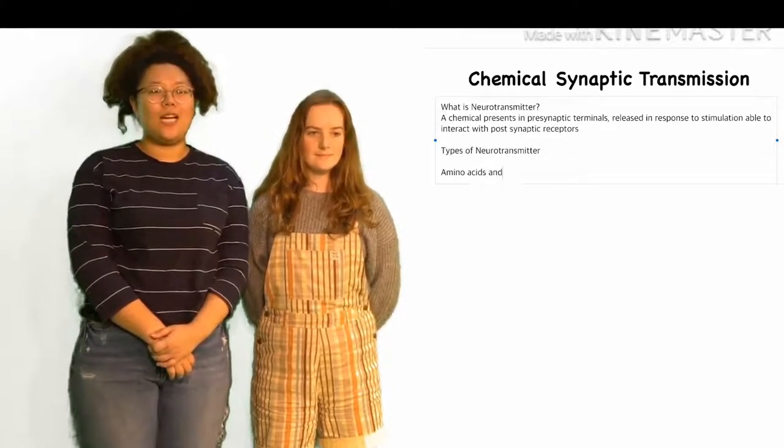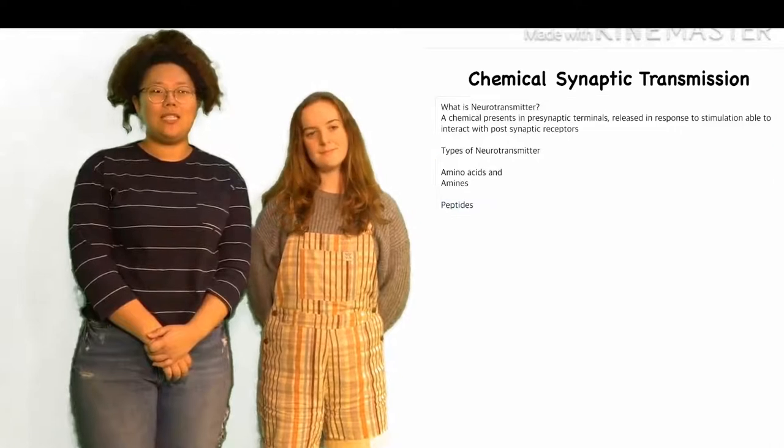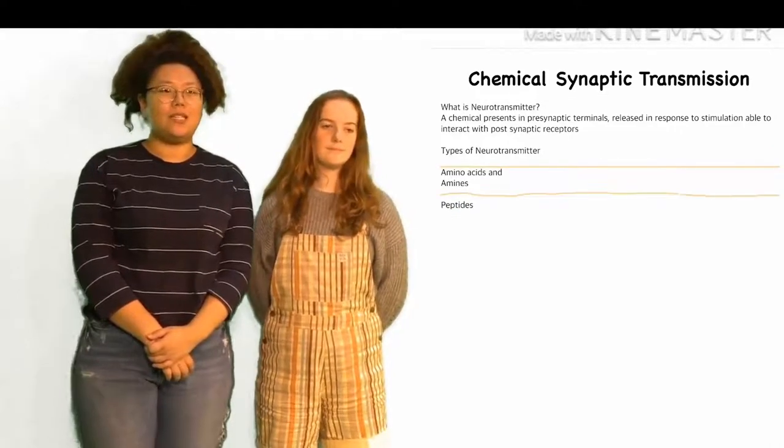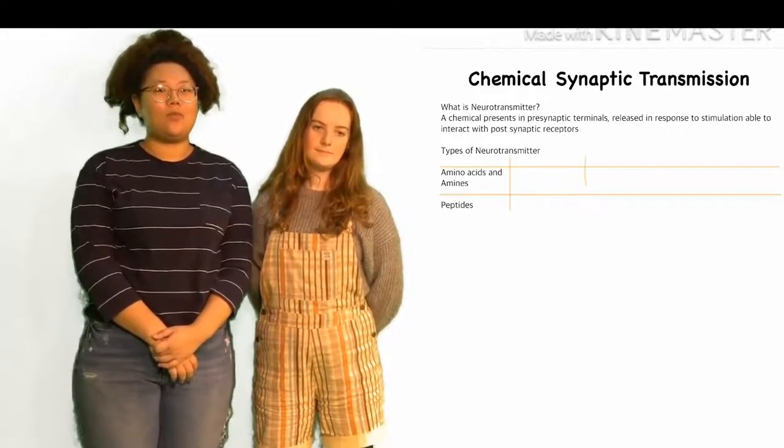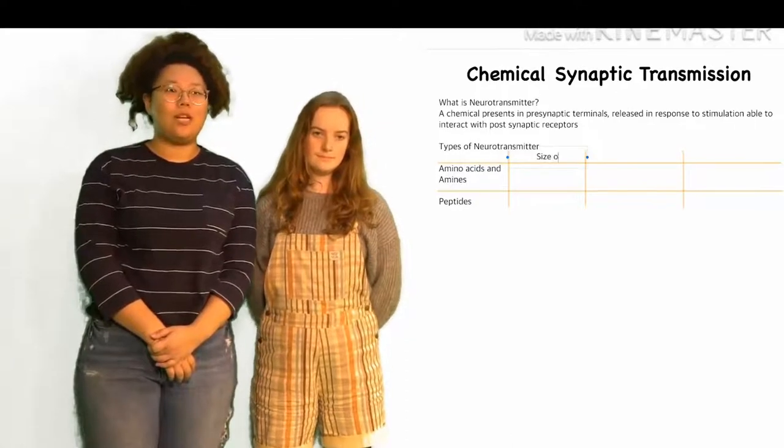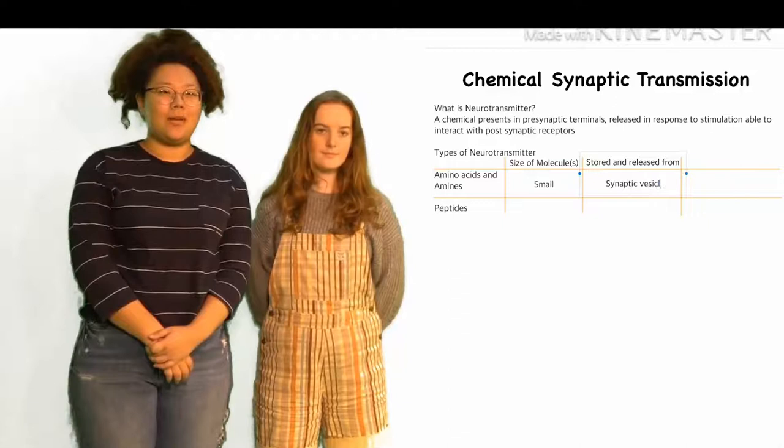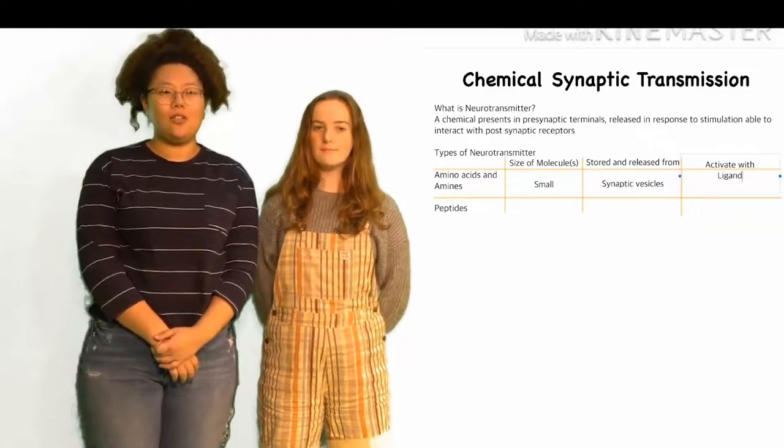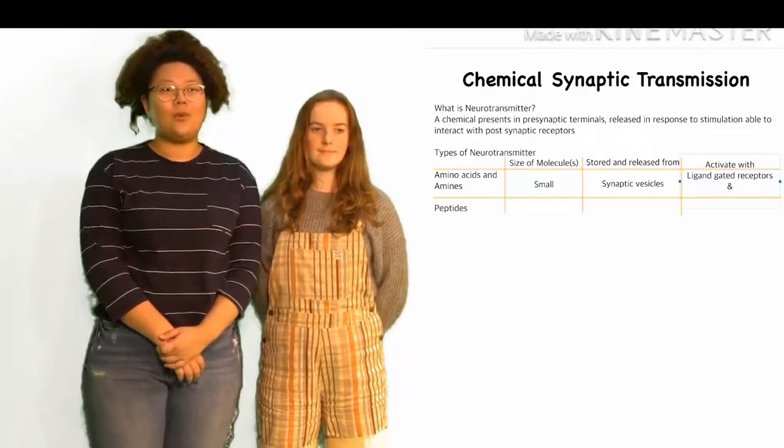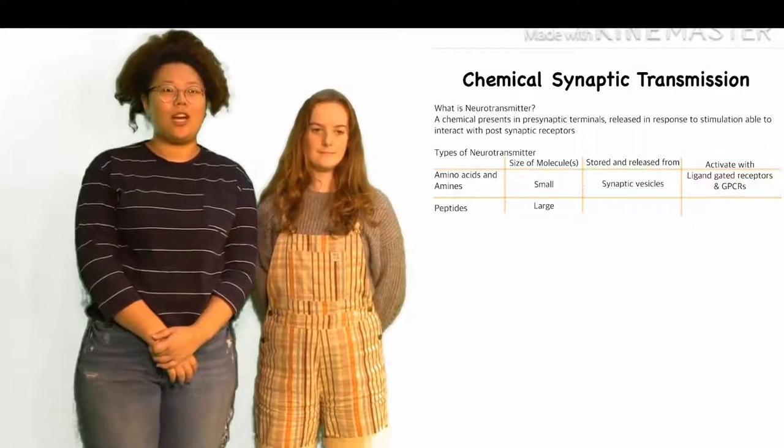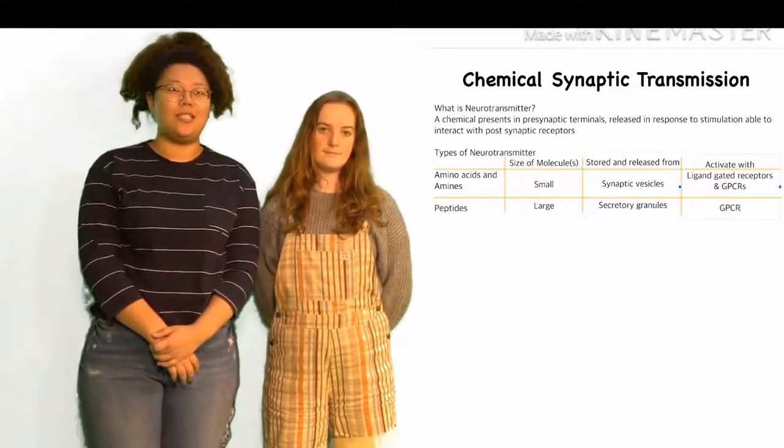The types of neurotransmitters can be divided into two groups: amino acids and amines, and peptides. Amino acids and amines are small molecules and they are stored and released from synaptic vesicles. They combine with both ligand-gated receptors and GPCRs. In contrast, peptides are large molecules which are stored in secretory granules and they only activate with GPCRs.